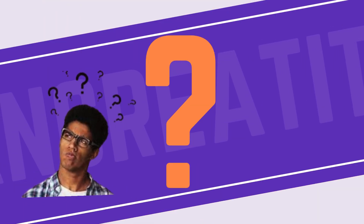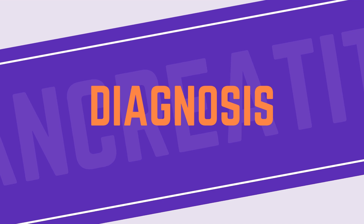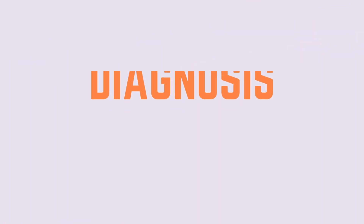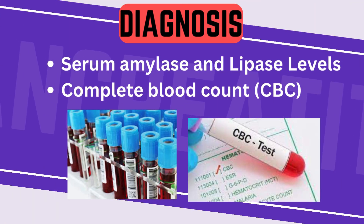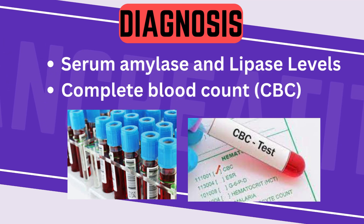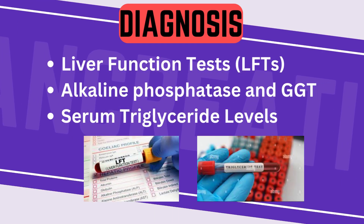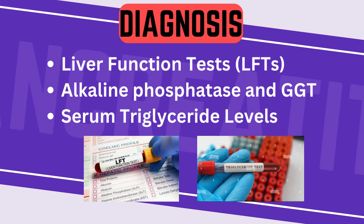How do we diagnose pancreatitis? The diagnosis involves a combination of clinical evaluation, laboratory tests, and imaging studies, including: 1. Serum amylase and lipase levels — elevated levels of these enzymes in the blood are indicative of pancreatic inflammation. 2. Complete blood count to check for signs of infection or inflammation. 3. Liver function tests to assess liver health and rule out other possible causes. 4. Alkaline phosphatase and gamma-GT. 5. Elevated serum triglyceride levels can also contribute to pancreatitis.